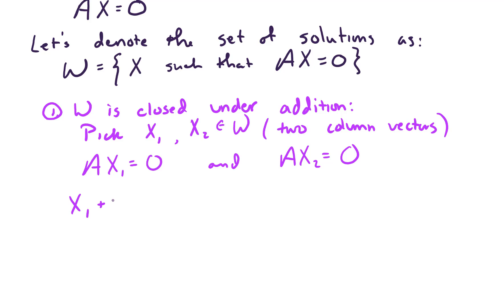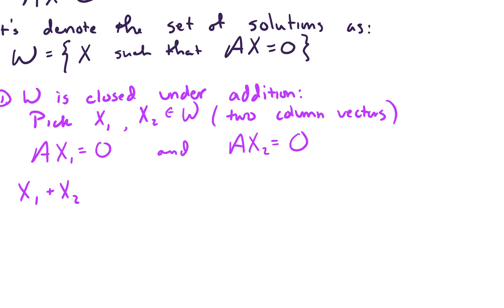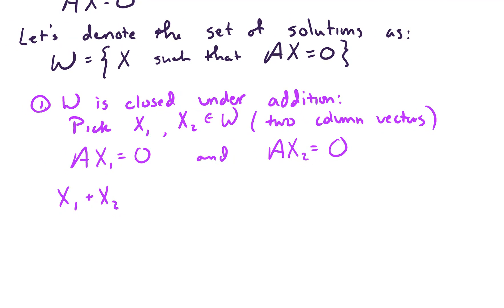And we want to show that if we add these two vectors, we want to show that W is closed under addition. So the question is, is X1 plus X2 in W? Well, it is in W because what's it mean to live in W? It means that A times (X1 plus X2) equals zero. And we know by properties of matrix multiplication, this is just AX1 plus AX2, and that's zero plus zero. So that is zero. In other words, that's the defining feature of living in W.